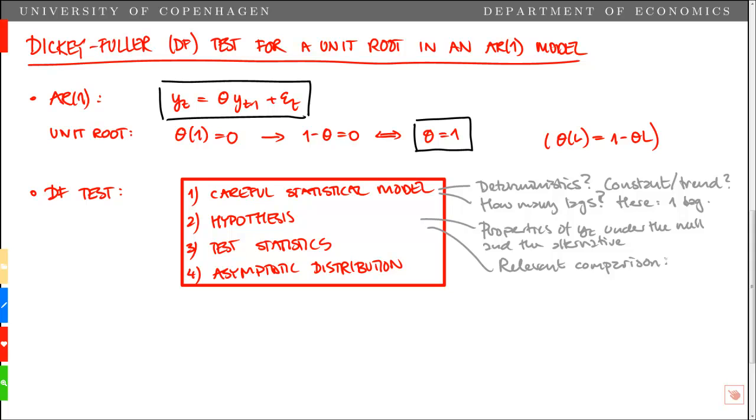In a stationary model, the constant term will determine the unconditional mean along with the autoregressive parameter. While in the unit root model, the constant term will accumulate into a deterministic trend. So we need to think about what the relevant comparison is.